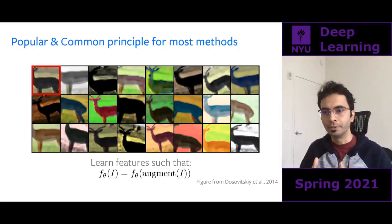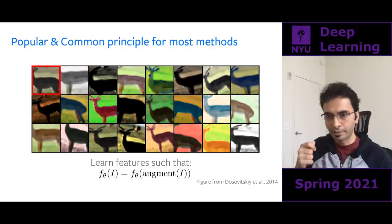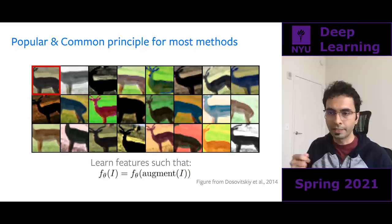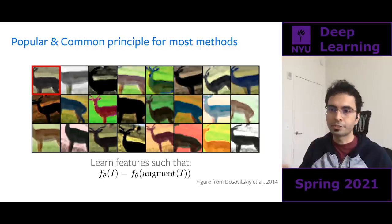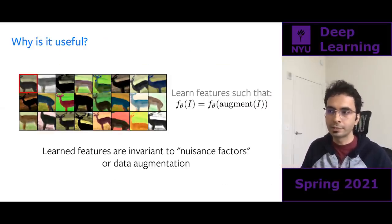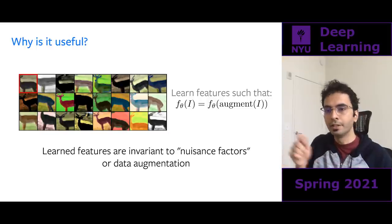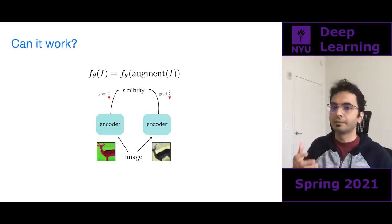In the past few years, a popular and common principle for high-performing self-supervised methods has been to learn features that are robust to data augmentation. The idea is you learn a function f parameterized by theta — this can be a ResNet — and you want the features produced on an image to be stable under different types of augmentations. If you augment image i you should get back the same feature. This means the features will be invariant to nuisance factors, so I can recognize the same deer regardless of color or time of day.